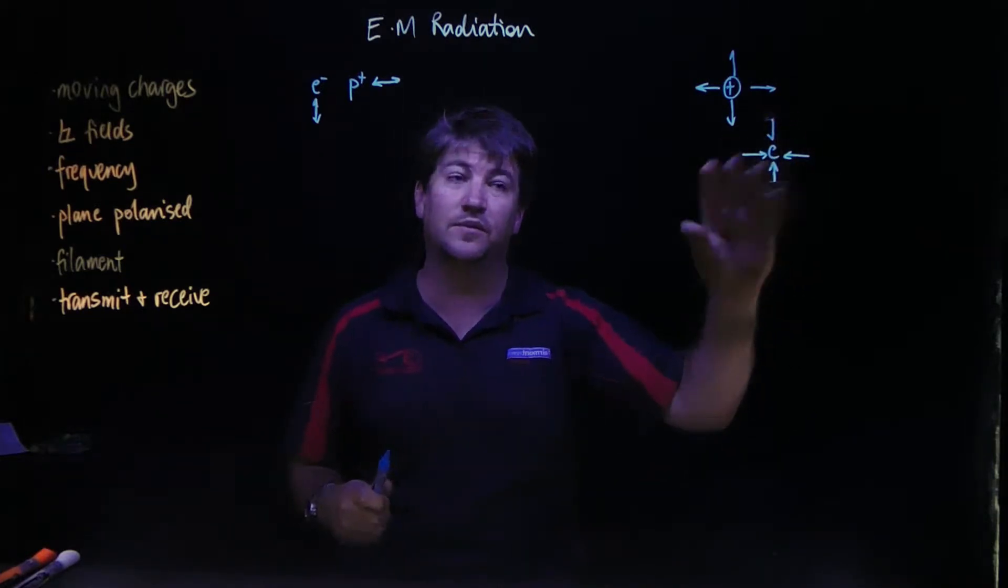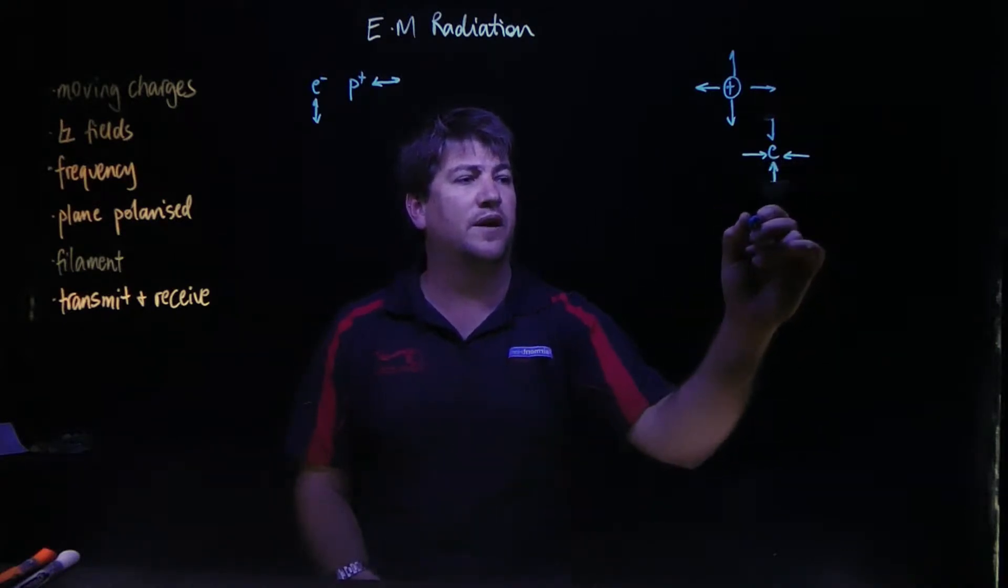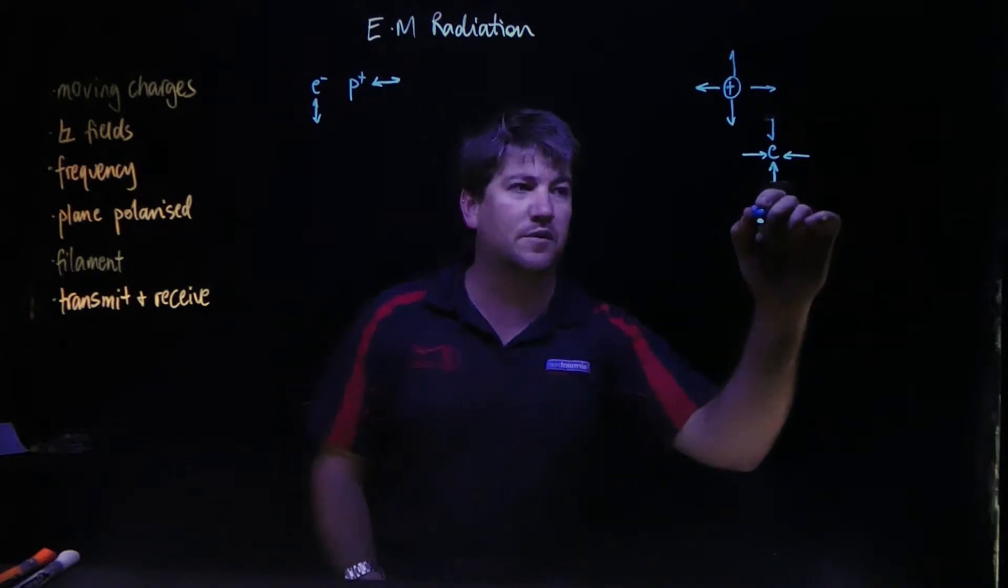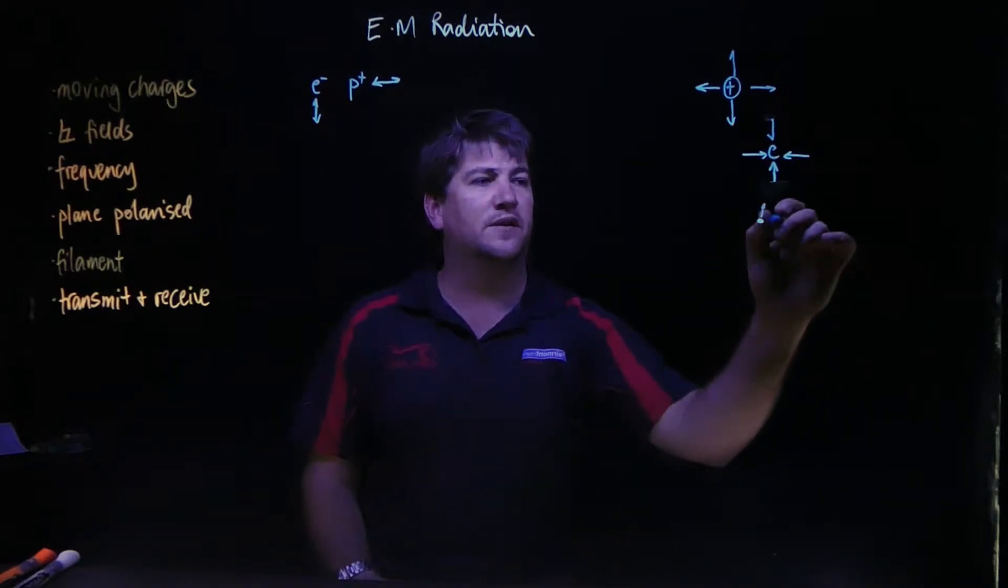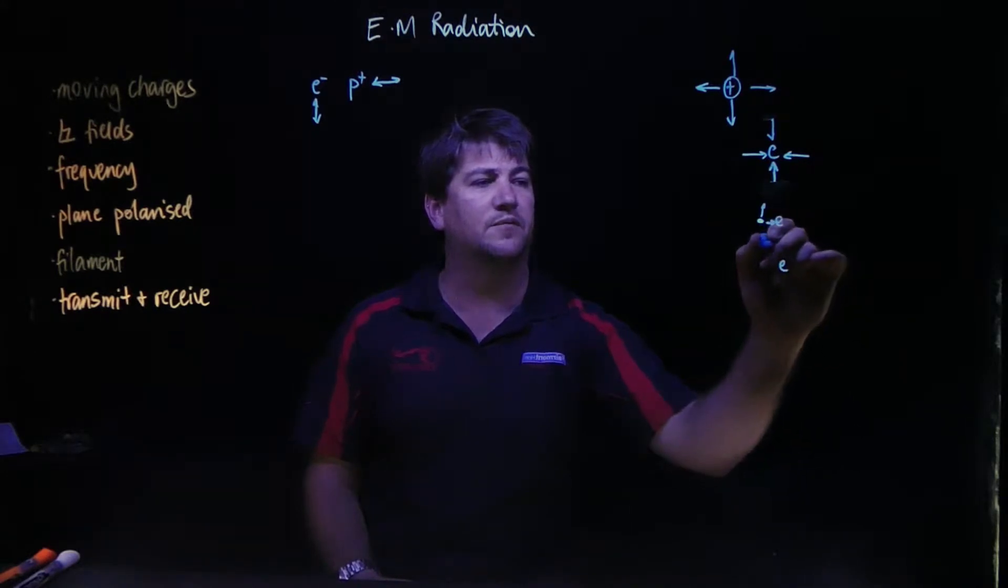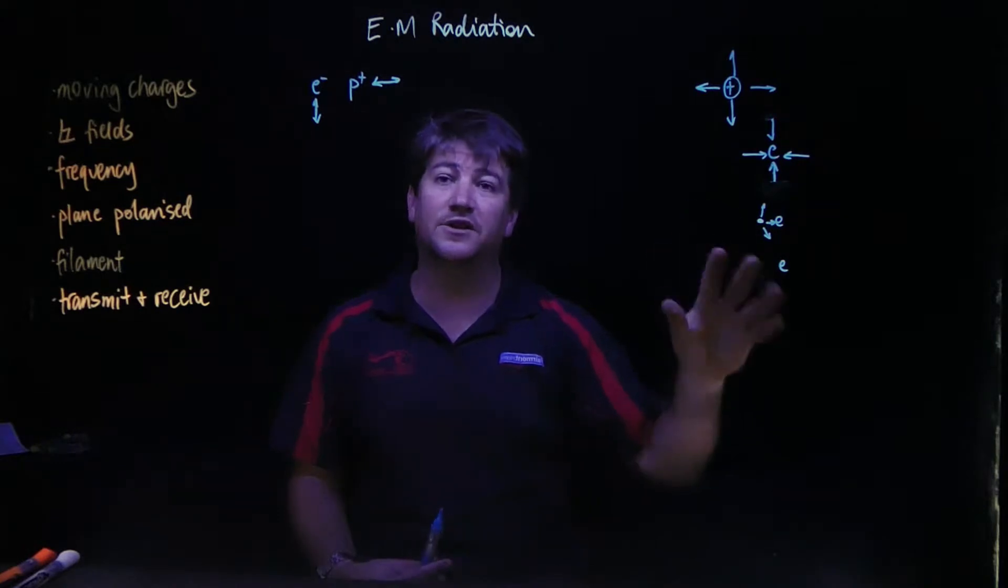If I make this electron stationary, that's what its field looks like. However, if I make this electron move, the electric field will change direction. So what I've actually done by making that charge move...